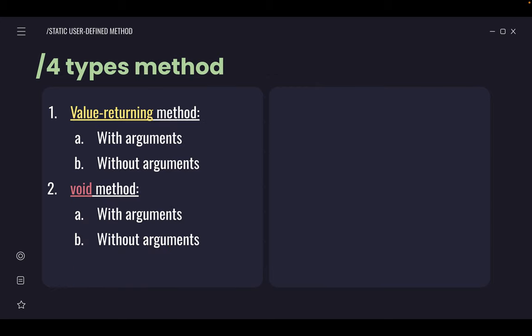We've seen two types of static user-defined methods. We've seen the general structure of method definition. Now look here. Generally, we've learned there are two types. When we have two types of methods, we can combine them into four varieties. So in the end, we will produce four types of methods.